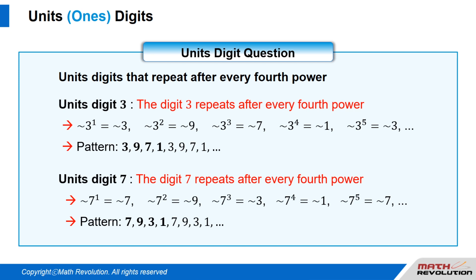Units digit 7: the digit 7 repeats after every fourth power. That is, 7 to the power of 1 equals 7, 7 to the power of 2 equals 9, 7 to the power of 3 equals 3, 7 to the power of 4 equals 1, and 7 to the power of 5 equals 7, and so on. Thus, the pattern is 7, 9, 3, 1, 7, 9, 3, 1.